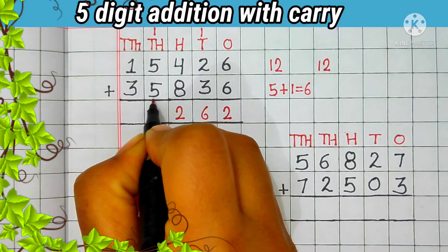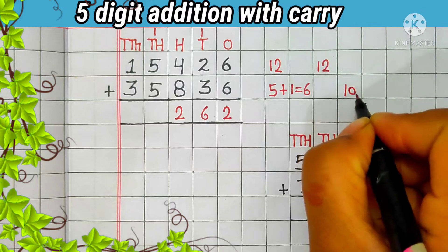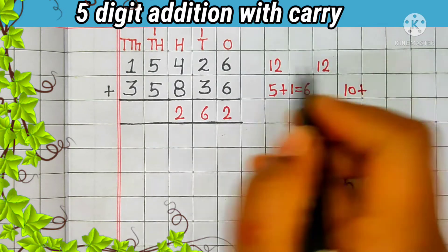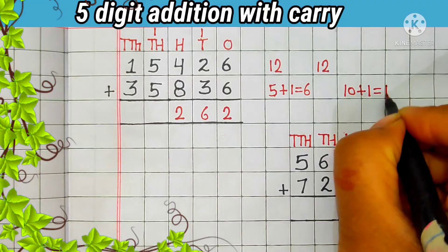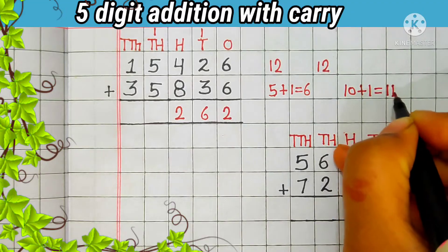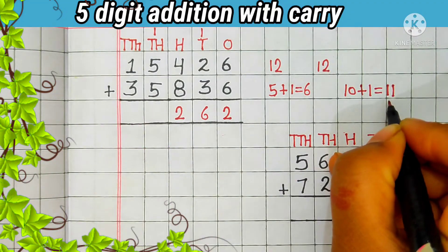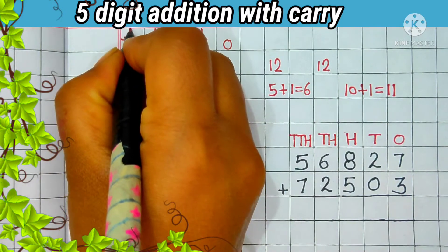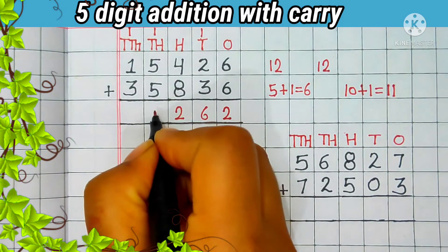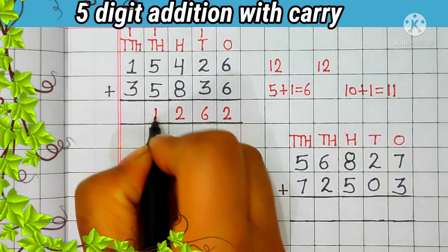Now add the digit at the 1,000s place. 5 plus 5 is equal to 10; 10 plus 1 carry is equal to 11. 11 is a 2-digit number. Now we will carry 1 to the 10,000s place, and 1 comes in the answer.